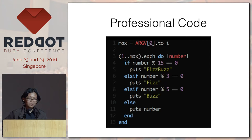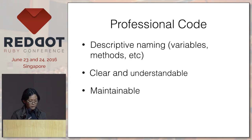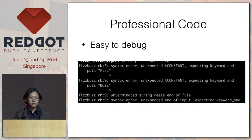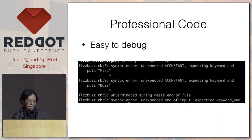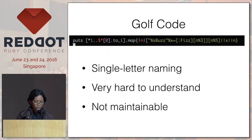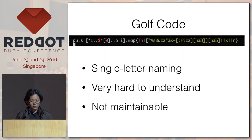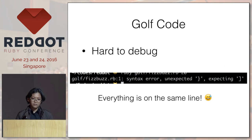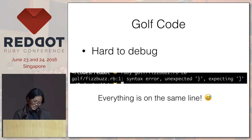The first kind of code is what professional code might look like — very clear. If you look at the variables, you understand what they're for. Descriptive naming, clear and understandable. It's maintainable and easy to debug. If there's an error, you'll see it's in line 7 or line 9, so you can just check those lines. Now for the golf code, it's single letter naming — what is X, what is N? Because of that, it's very hard to understand, not maintainable, and hard to debug. If you have an error, it says error in line 1, but everything is in line 1. One more thing: if your teammates or your boss see you doing golf code, you might get fired.